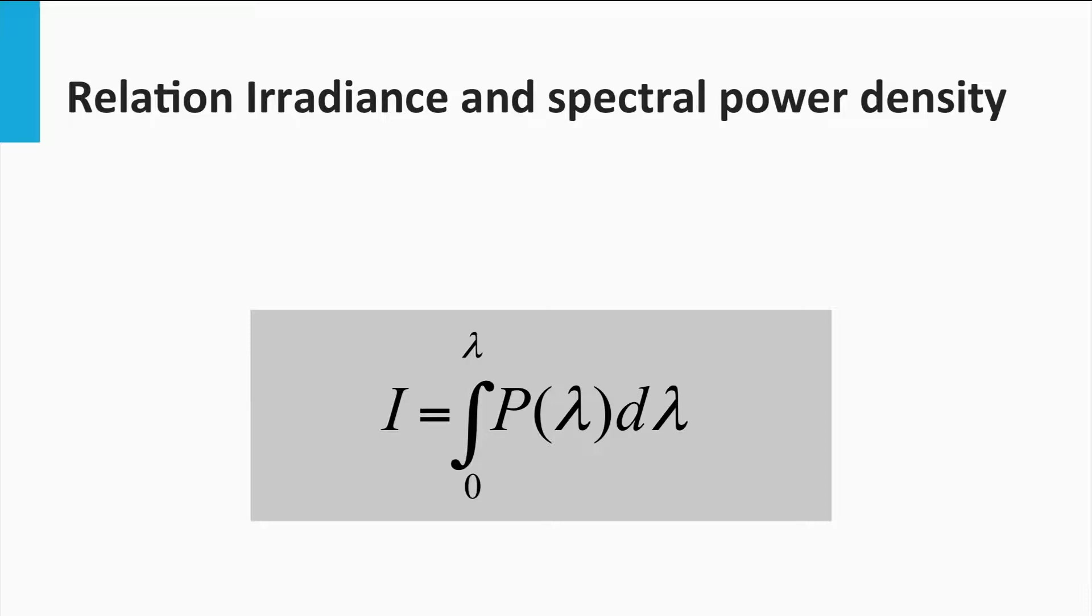Next we introduce the spectral power density P, a quantity which has spectral information in contrast to the irradiance. The spectral power density is the incident power per unit area and per unit wavelength. The irradiance and spectral power density are related to each other with this simple formula.